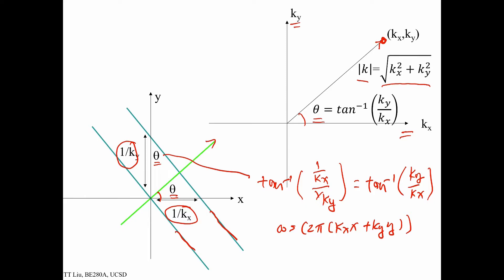What this means is that if we're thinking about some point in k-space, it's going to represent a wave that has wave fronts perpendicular to that vector. Since this theta and this theta are exactly the same, we know that for any k-vector we draw in k-space, it corresponds to a component that has wave fronts perpendicular to that vector.